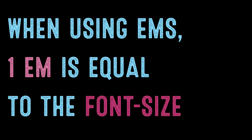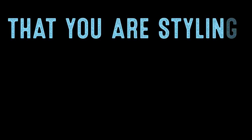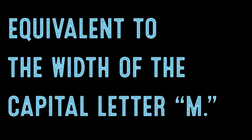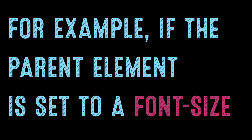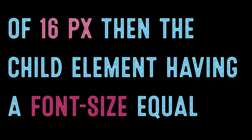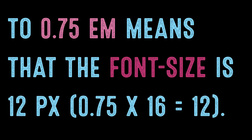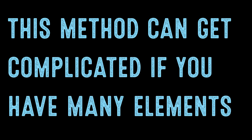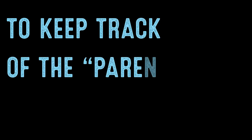What is an em? When using ems, 1em is equal to the font size set on the parent element of the current element that you are styling. Ems are named because they were equivalent to the width of the capital letter M. For example, if the parent element is set to a font size of 16 pixels, then a child element with a font size of 0.75em means the font size is 12 pixels. This method can get complicated if you have many elements nested in one another, so it becomes difficult to keep track of the parent element.